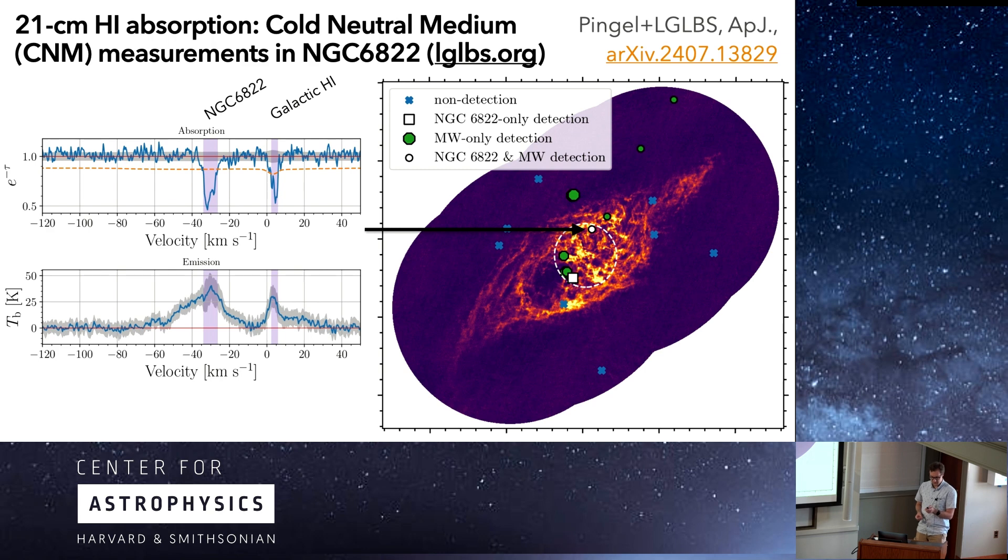And this is the first detections of the CNM using 21-centimeter absorption in the dwarf galaxy NGC6822. This is hundreds of hours with the VLA, and this gives us two detections. It's also close in velocity to the galaxy, and so the example I'm showing here, we actually have two components. One is the galactic one, and one is the one coming from 6822.